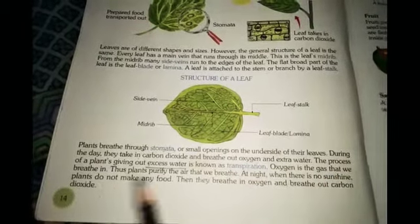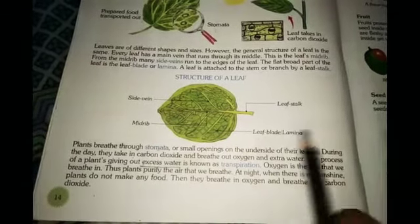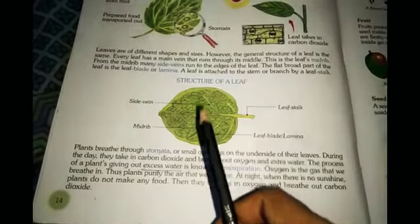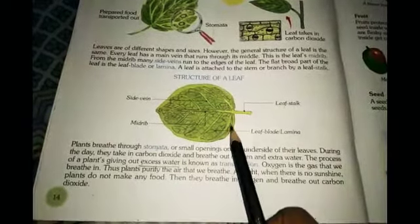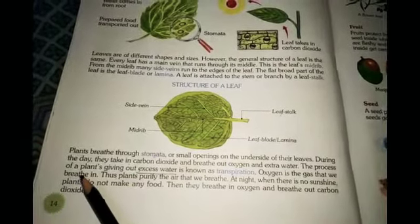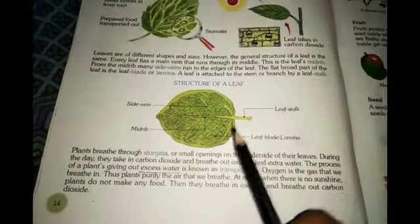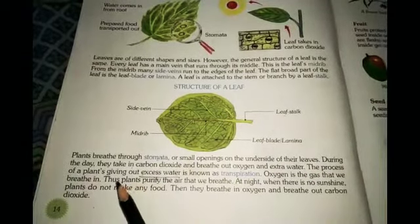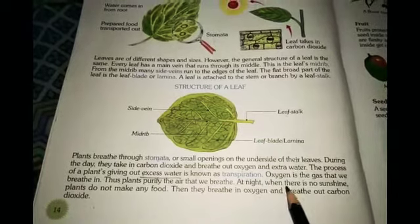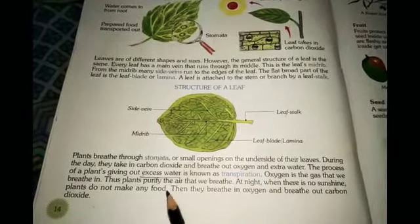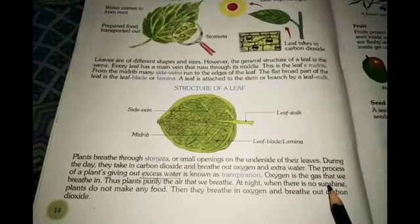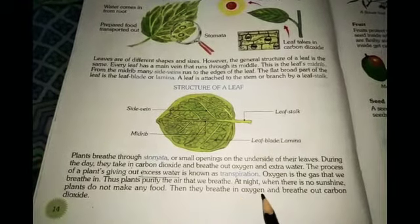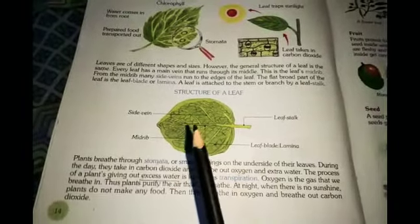Oxygen is the gas that we breathe in. Thus, plants purify the air that we breathe. During transpiration in the daytime, plants breathe out oxygen and excess water. This oxygen is very necessary for human breathing, because humans breathe in oxygen and breathe out carbon dioxide, while leaves breathe in carbon dioxide and breathe out oxygen — with this process, plants purify the air. At night, when there is no sunshine, plants do not make any food. Then they breathe in oxygen and breathe out carbon dioxide.